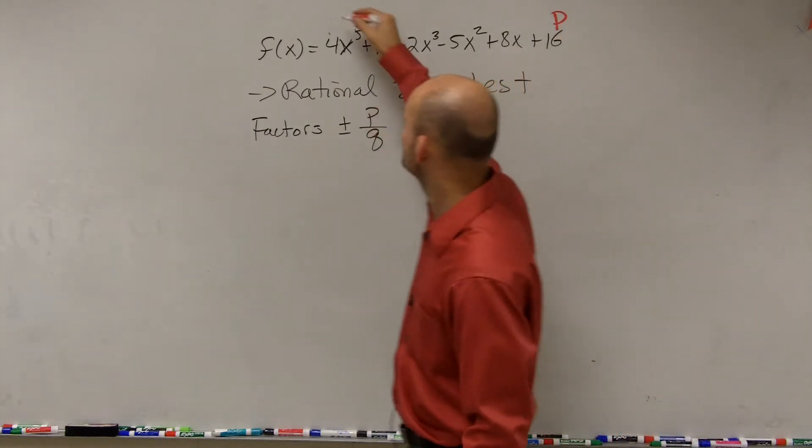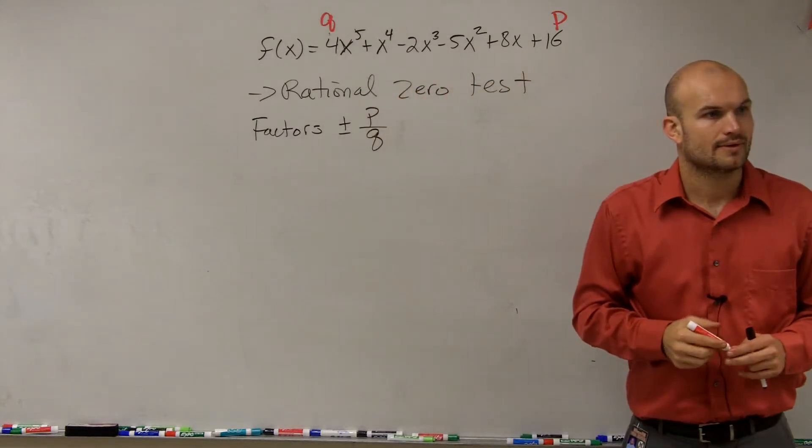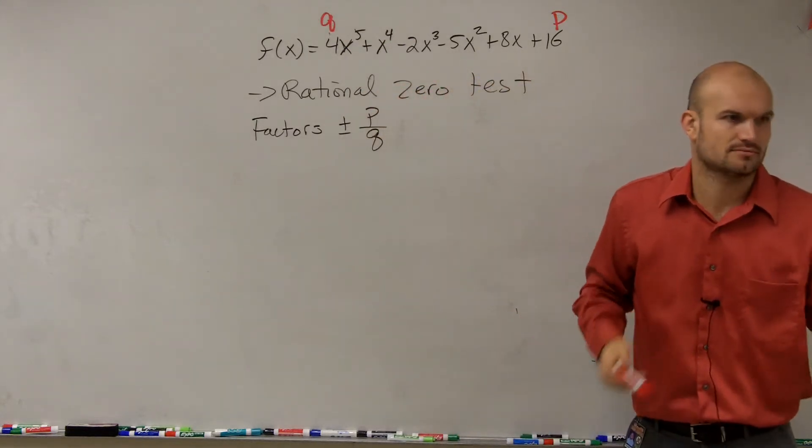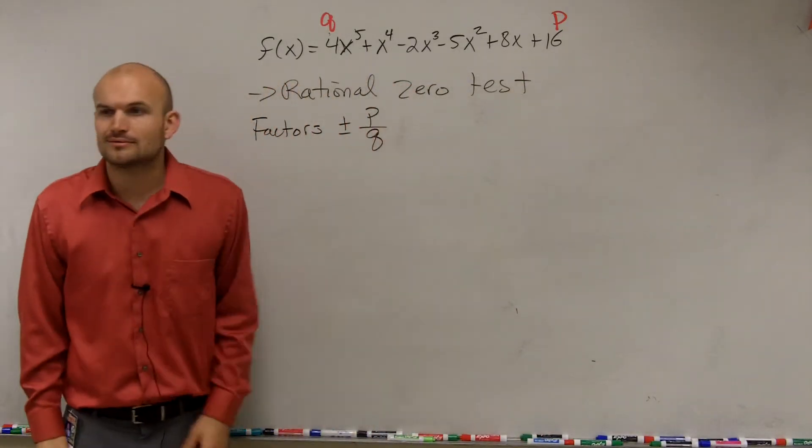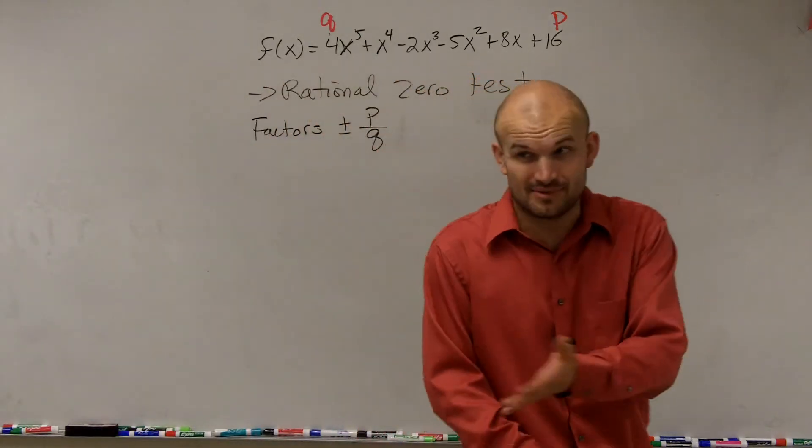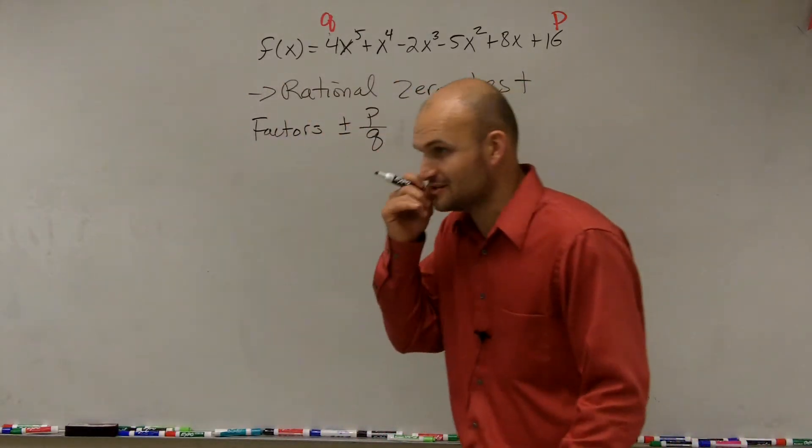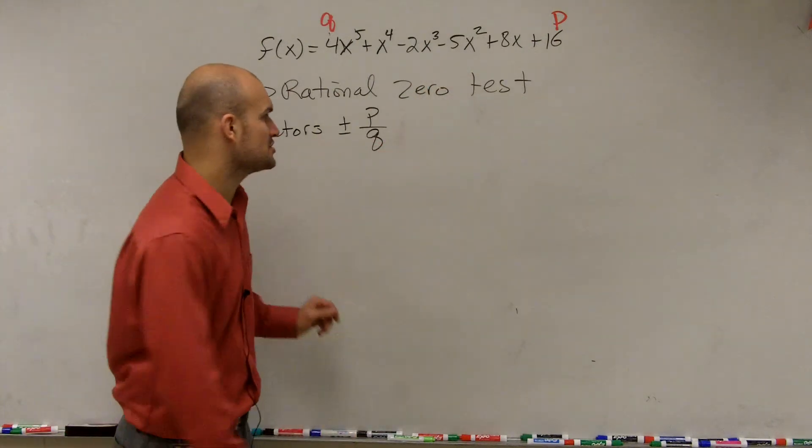16 is our p. 4 is our q. OK? So now to do this problem, I'm going to ask you, hey, state all the rational zeros. That's going to be a test question. Hey, find all the rational zeros. So you have to remember p and q. So let's go through it.